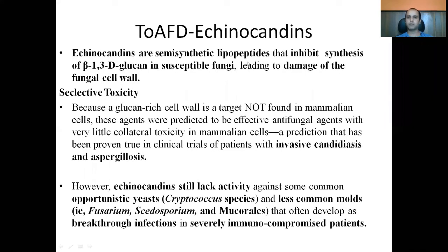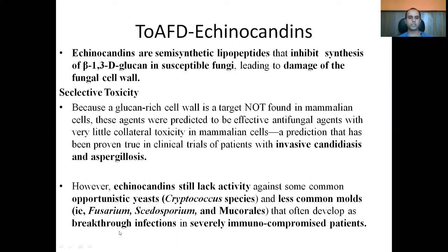Echinocandins are semi-synthetic lipopeptides that inhibit the synthesis of beta-1,3-glucan in susceptible fungi, damaging the fungal cell wall. Because mammals do not have cell walls, echinocandins have relatively selective toxicity. However, echinocandins still lack activity against opportunistic yeasts and molds like Cryptococcus species and less common molds like Fusarium and Scedosporium, which are still seen in severely immunocompromised patients.